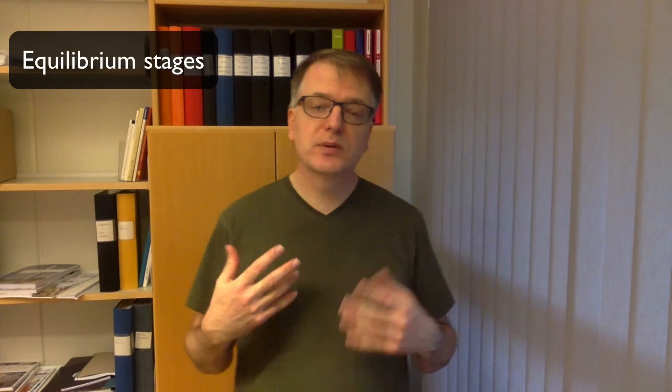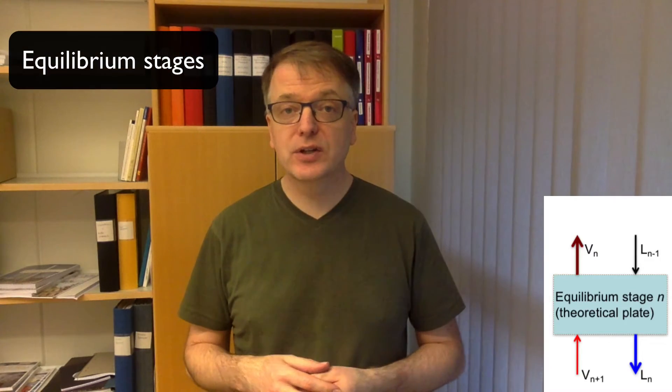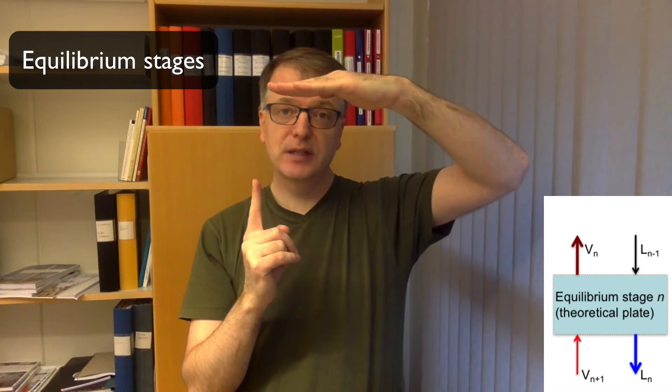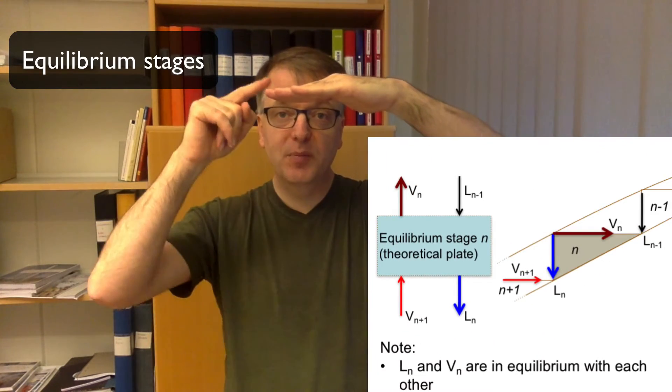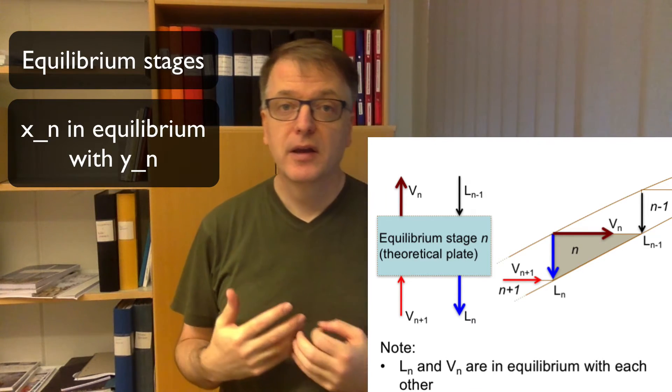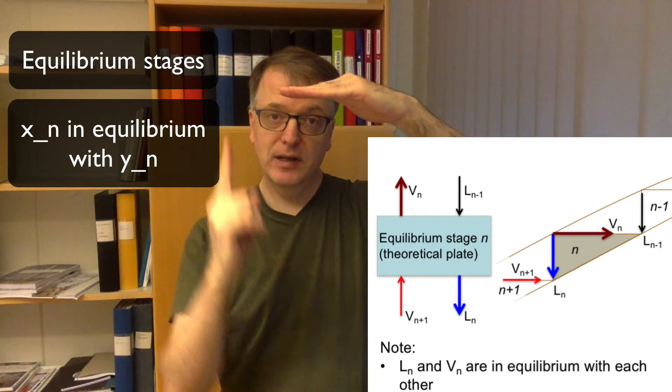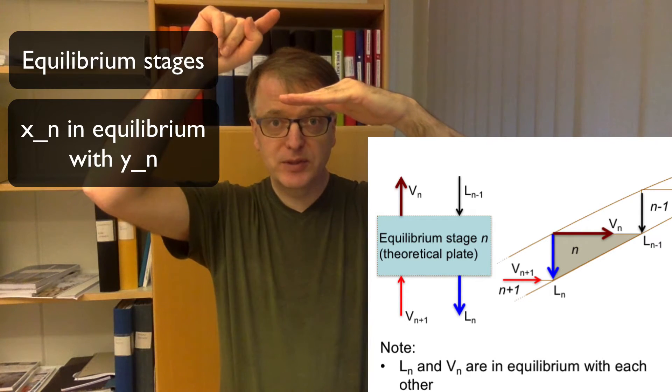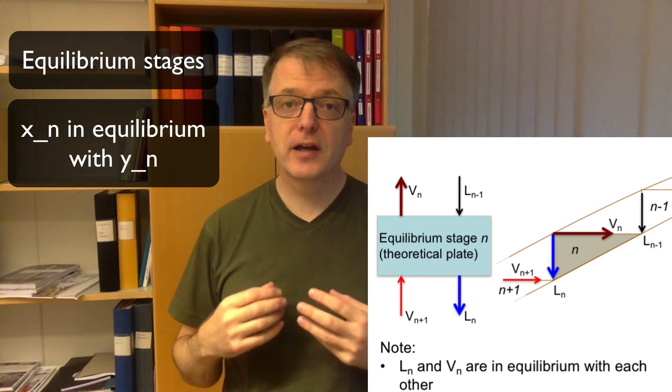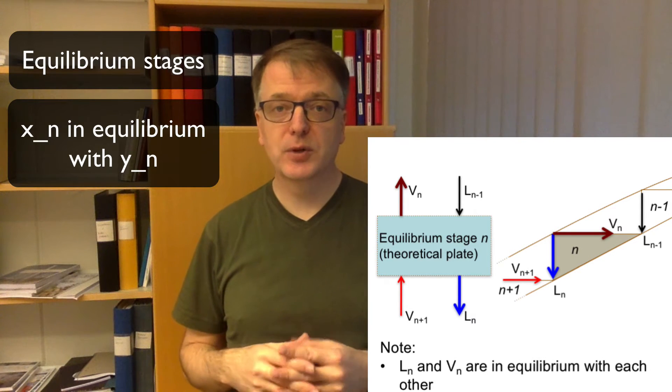So we have talked about equilibrium stages and we have said that that's a theoretical construct where we assume that the liquid leaving that equilibrium stage is in perfect equilibrium with the vapor leaving. So if you plot in an xy diagram the x of the liquid leaving the composition and the y the composition of the gas, you find that point on the system curve.